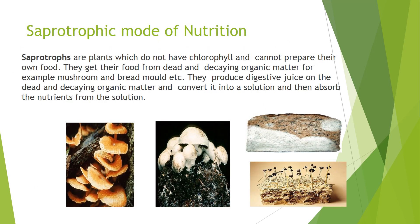Now, saprotrophic mode of nutrition is seen in fungi. Saprotrophs are plants which do not have chlorophyll so they are not green in color, and cannot prepare their own food. They feed on dead and decaying matter and derive their nutrition in solution form. Examples of saprotrophs are bread mold, that is Rhizopus which grows on bread, and the mushroom. The organisms which show saprotrophic mode of nutrition are called saprotrophs.